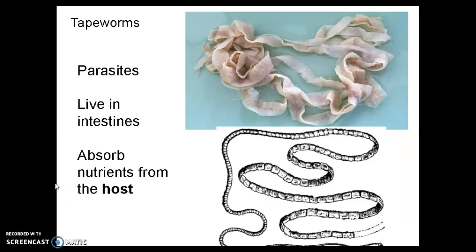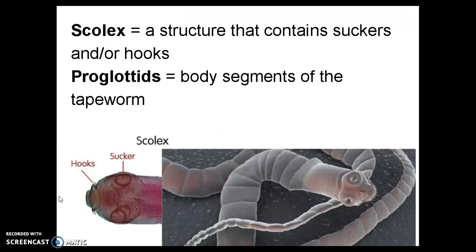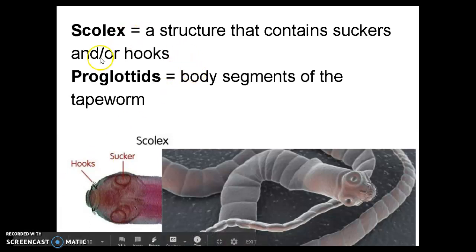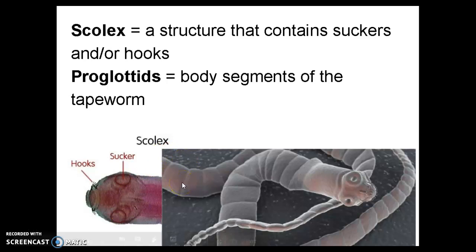Next, we have tapeworms. Tapeworms are parasites that can live in your intestines and absorb nutrients from the host. You can get tapeworms from eating undercooked meat. We can see the beginnings of cephalization in the tapeworm — they have something called a scolex, which is a structure containing suckers and/or hooks that allow them to adhere to your intestines. Each of the little segments in the tapeworm is called a proglottid. These can break off and get eliminated in feces to spread. Each individual proglottid contains both male and female parts, so tapeworms are also hermaphroditic.